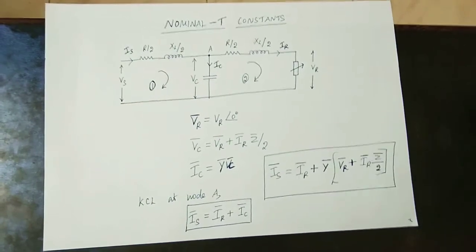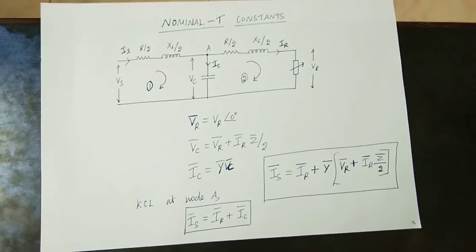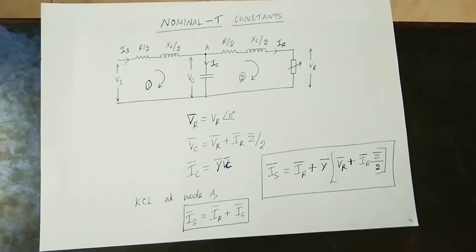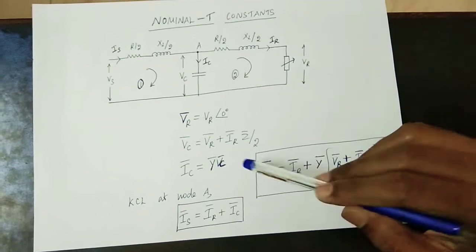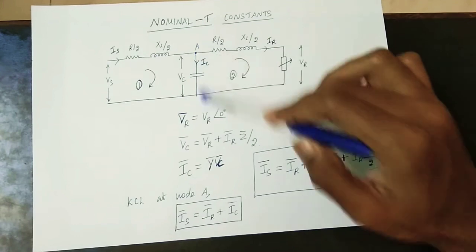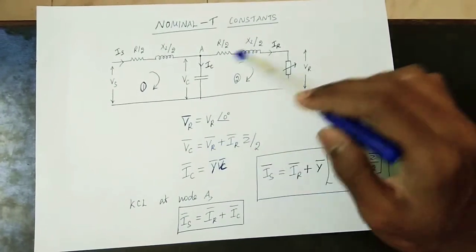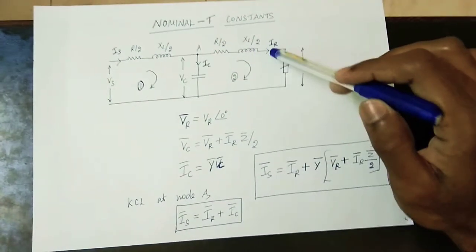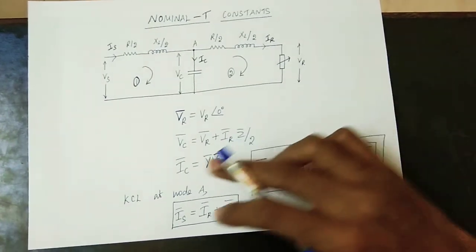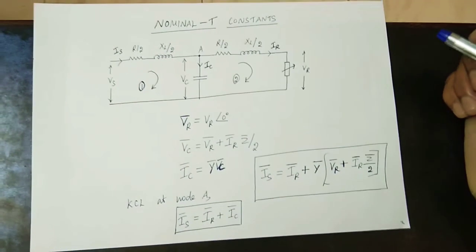The current is also a reference, but the standard is to use voltage as the reference. Current is the varying parameter. The capacitor voltage Vc equals the voltage across the impedance plus the voltage across the receiving end load. So, Vc is equal to Vr plus Ir into Z by 2, where Z/2 is the impedance and Ir is the receiving end current.